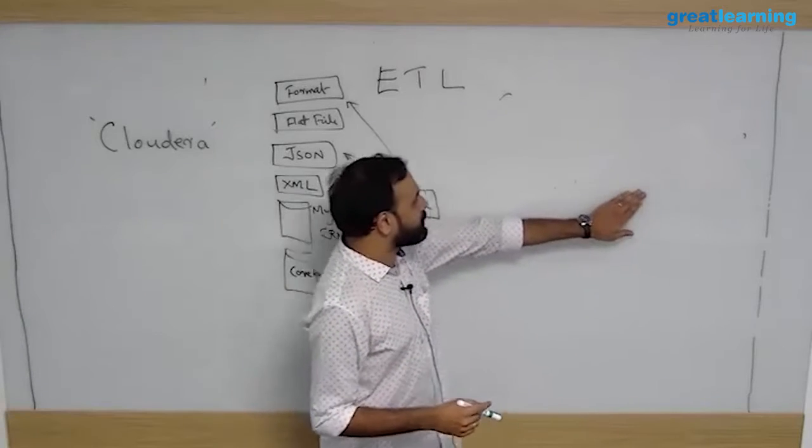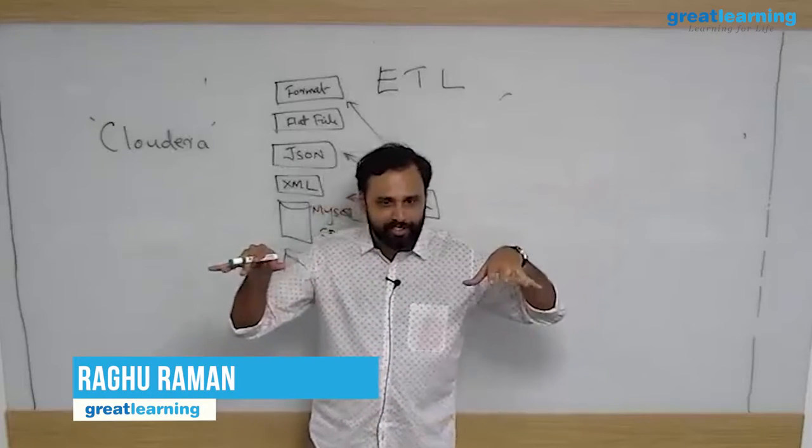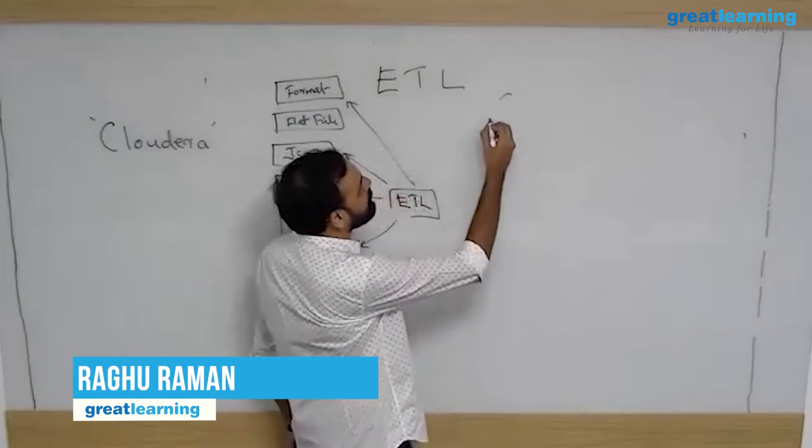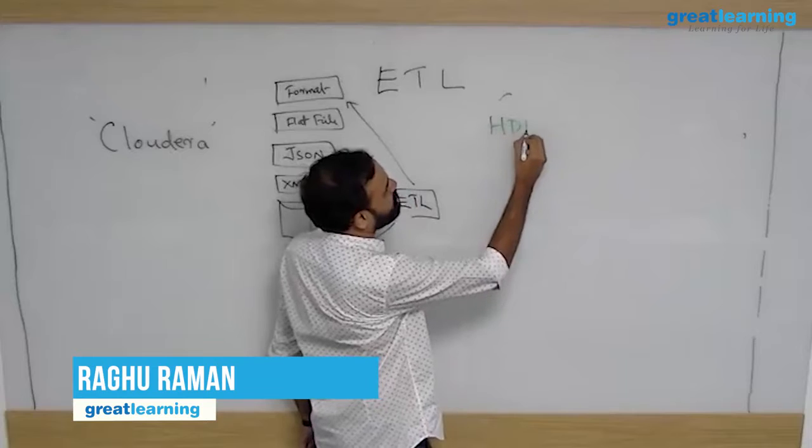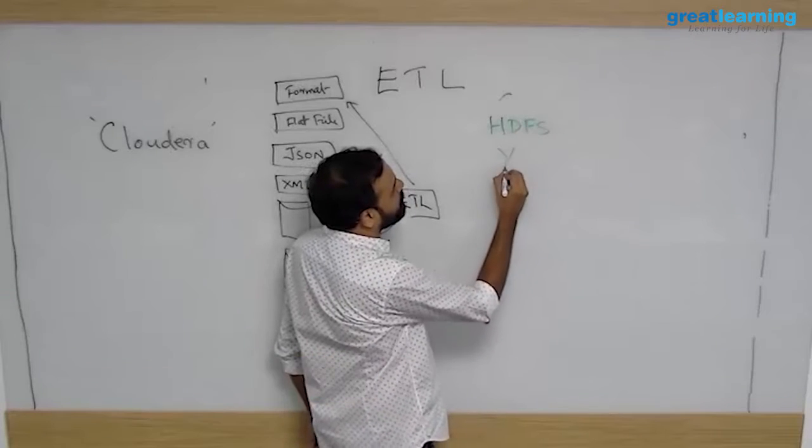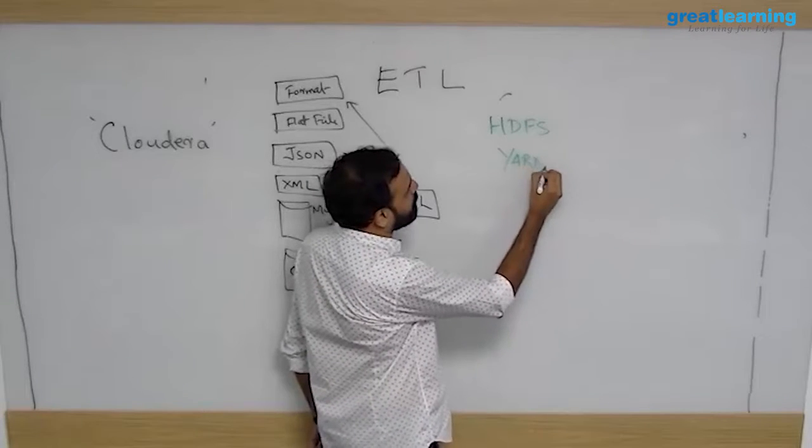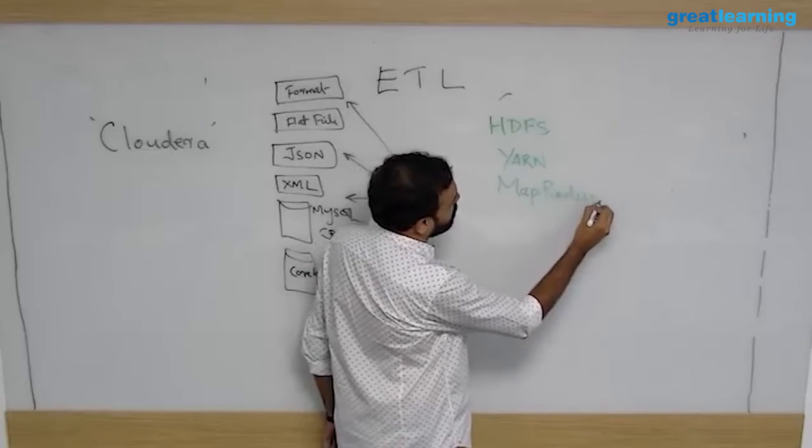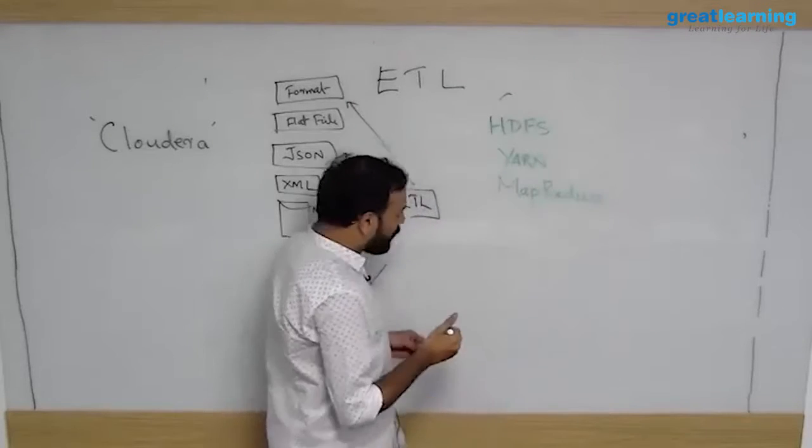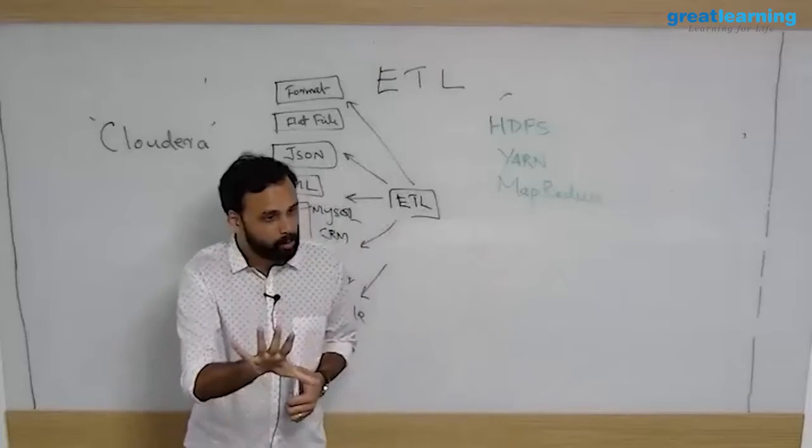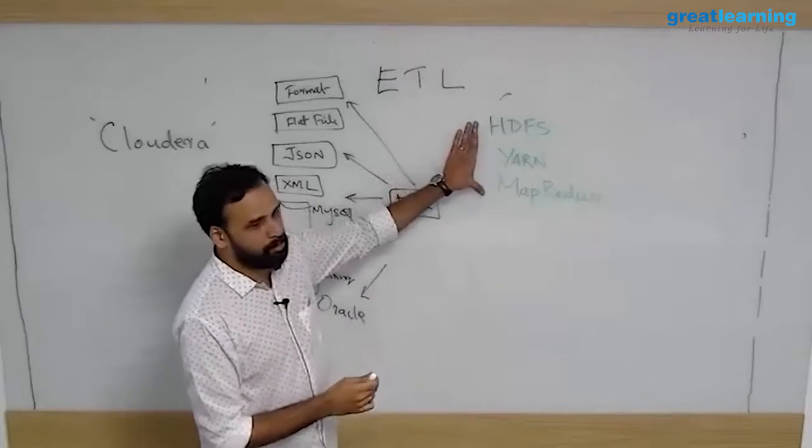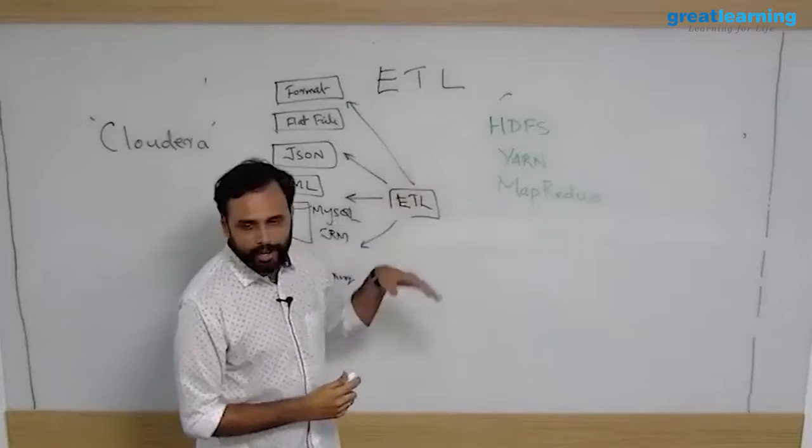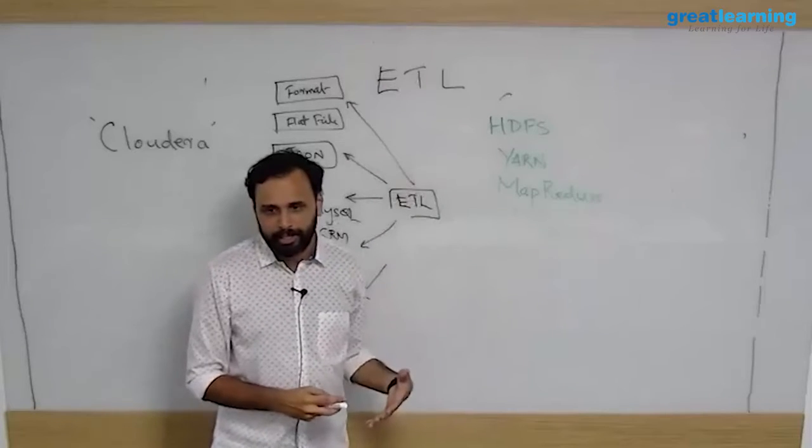Now what you need to understand is that Hadoop has three major components: HDFS, YARN, and MapReduce. When you download and install Hadoop, these three things will come by default - HDFS, YARN, and MapReduce. These three components will be installed by default and you don't have to do anything.